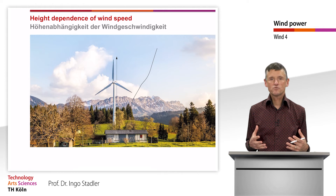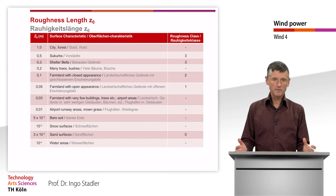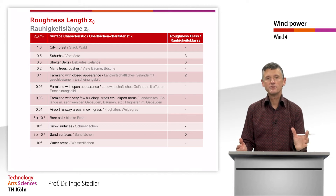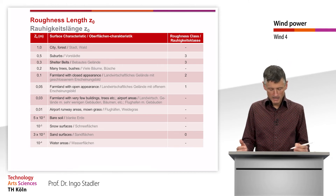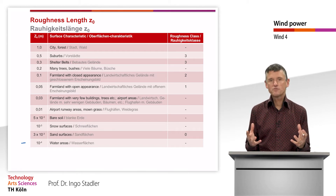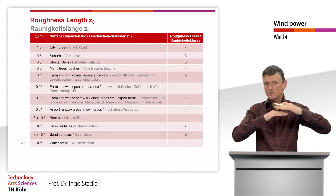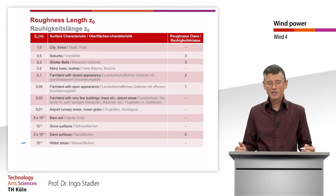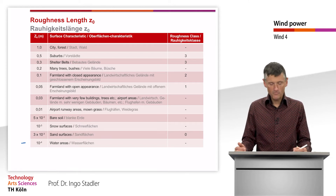When we want to describe how wind speed develops with different heights, we need to use the roughness length, which we call z-zero and give in meters. This expresses that up to a height equal to this roughness length, the mean wind velocity due to turbulences is zero. Above water surfaces this roughness length is just 10 to the minus 4 meters — very small.